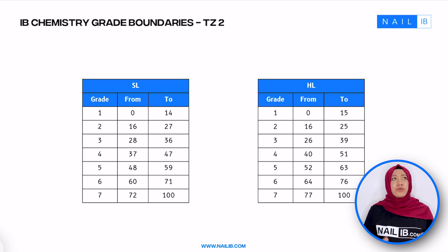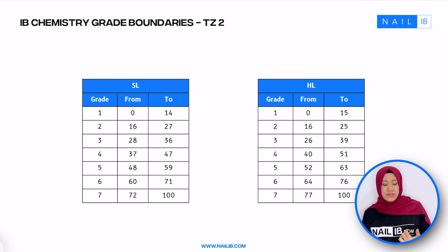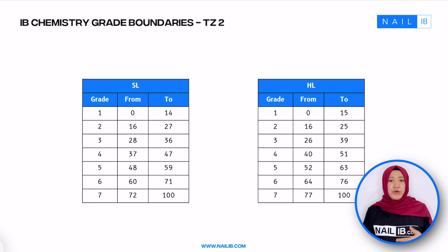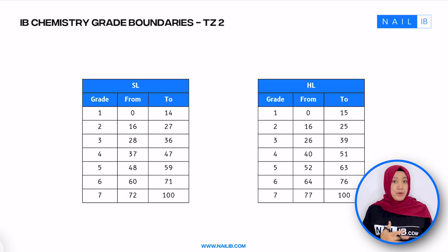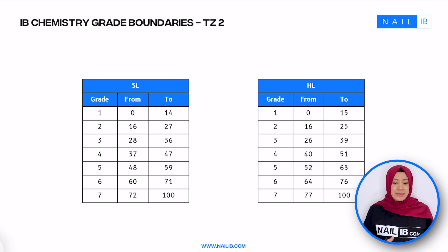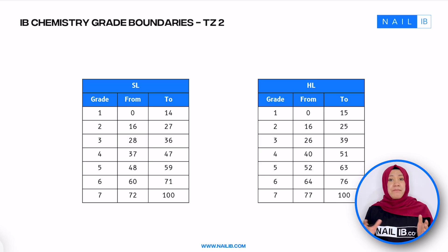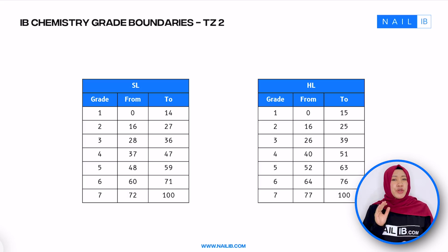We have talked about the different themes from the new IB chemistry syllabus, external assessment with its weight, and examples of both paper one and two questions. Also, internal assessment briefly, and the grade boundaries for IB chemistry. In the next video, I'll discuss a road map for you to learn the subtopics. Remember, with NAIL IB, you can achieve a score of seven. See you in the next video.